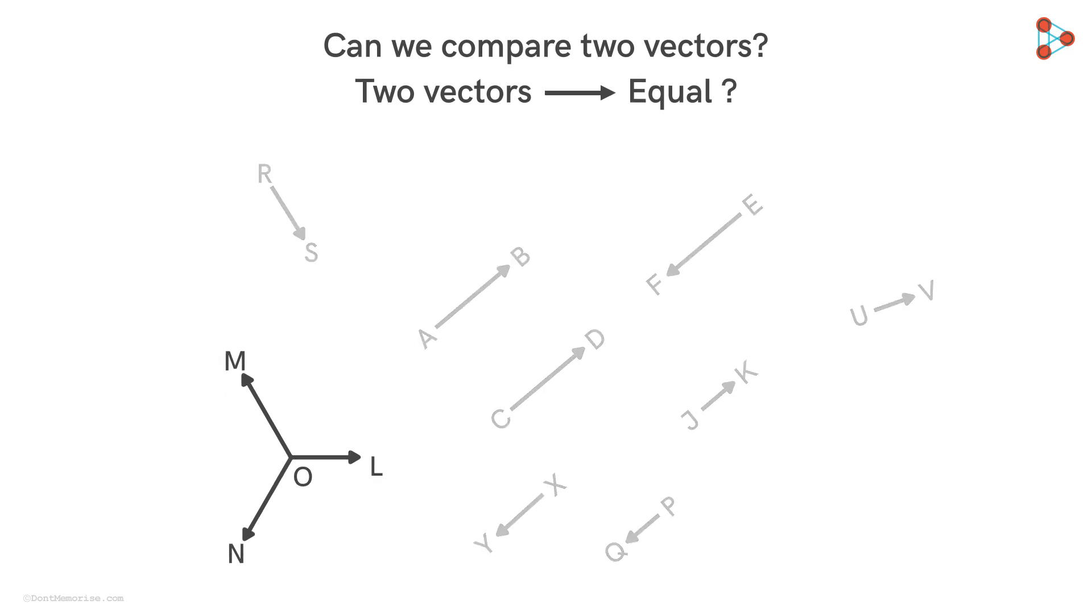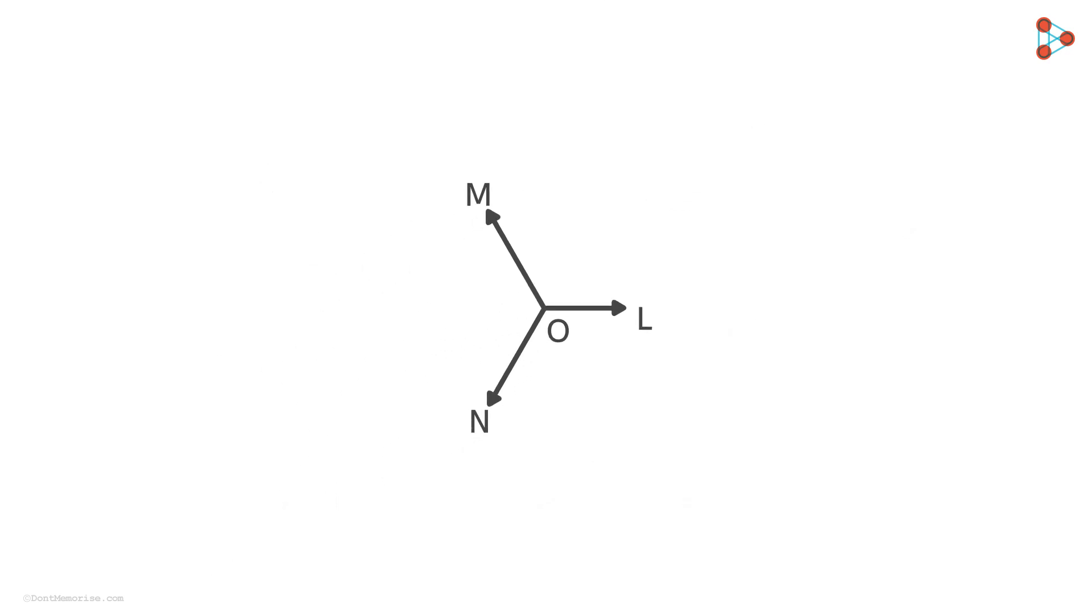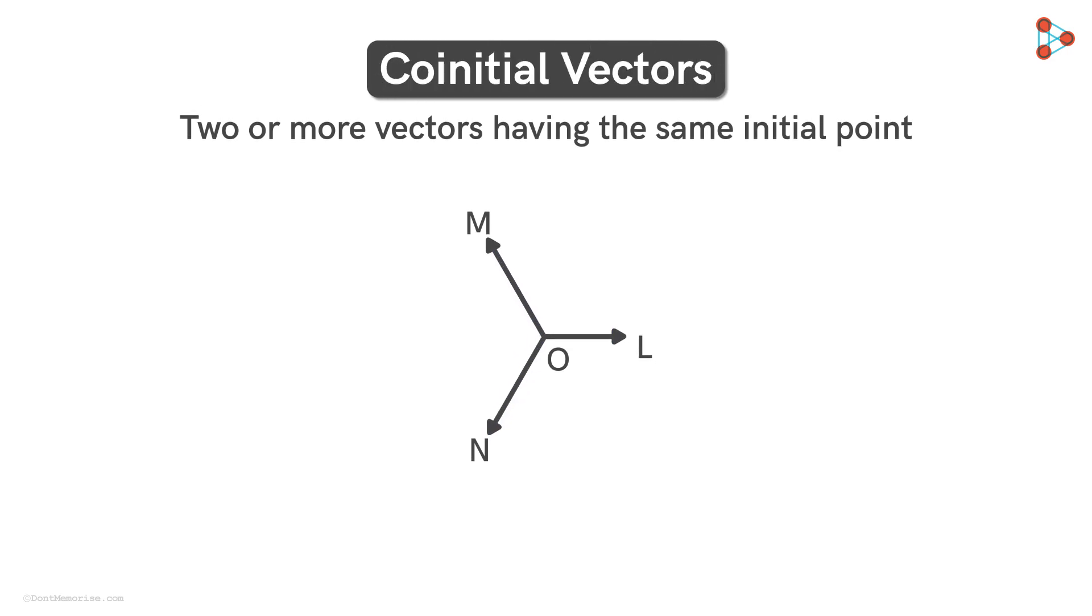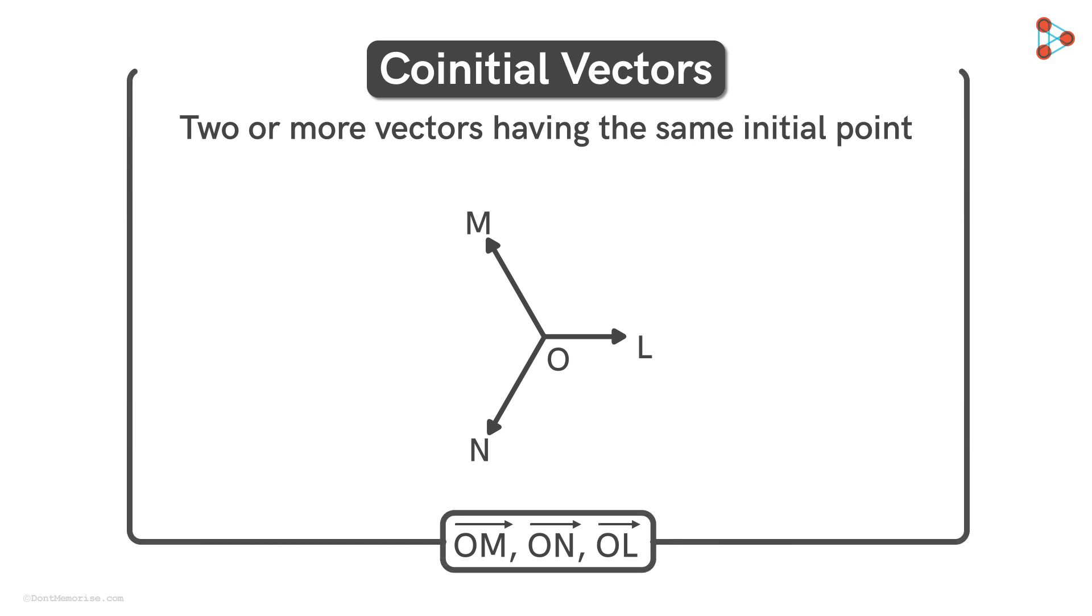First, let's consider these vectors. We can see that they all have a common initial point O. Two or more vectors having the same initial point are called co-initial vectors. So here, vectors OM, ON and OL are all co-initial vectors.